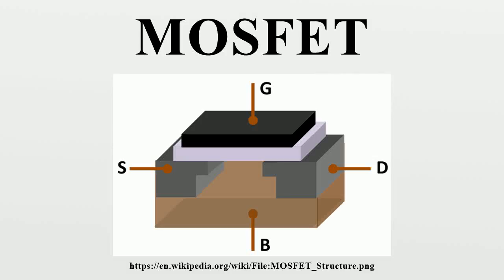The metal oxide semiconductor field effect transistor is a type of transistor used for amplifying or switching electronic signals. Although the MOSFET is a four-terminal device with source, gate, drain, and body terminals, the body of the MOSFET is often connected to the source terminal, making it a three-terminal device like other field effect transistors. Because these two terminals are normally connected internally, only three terminals appear in electrical diagrams.